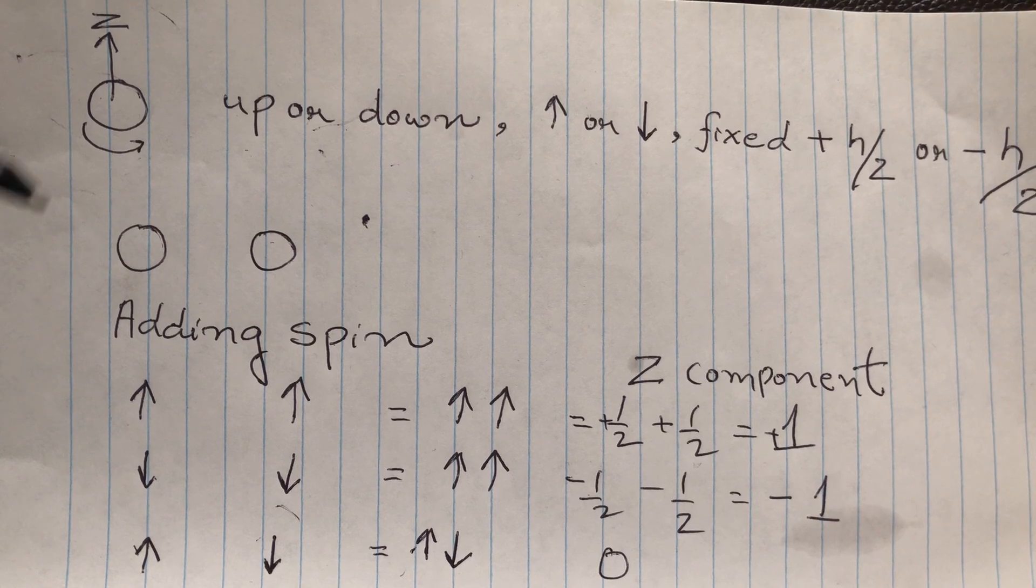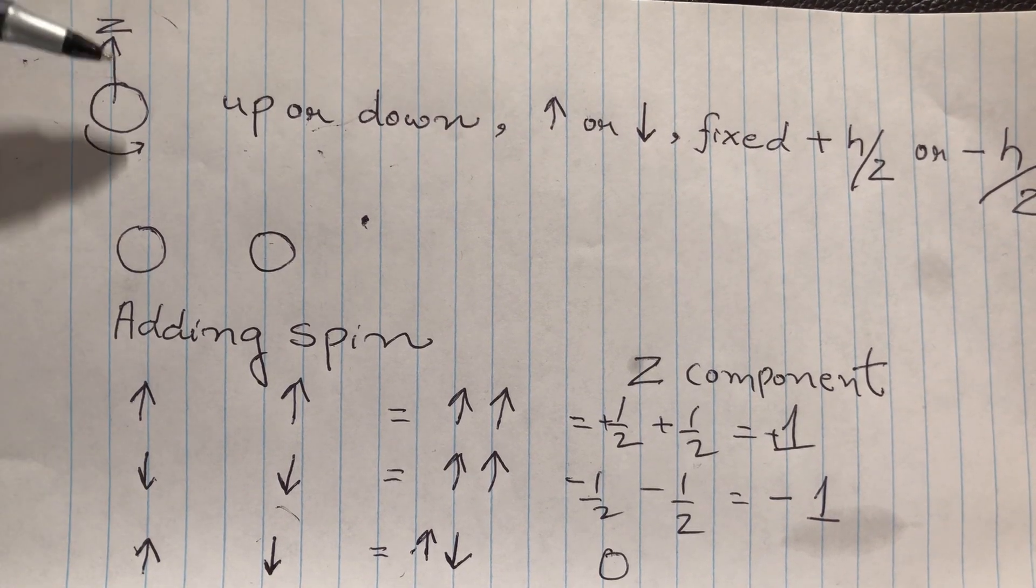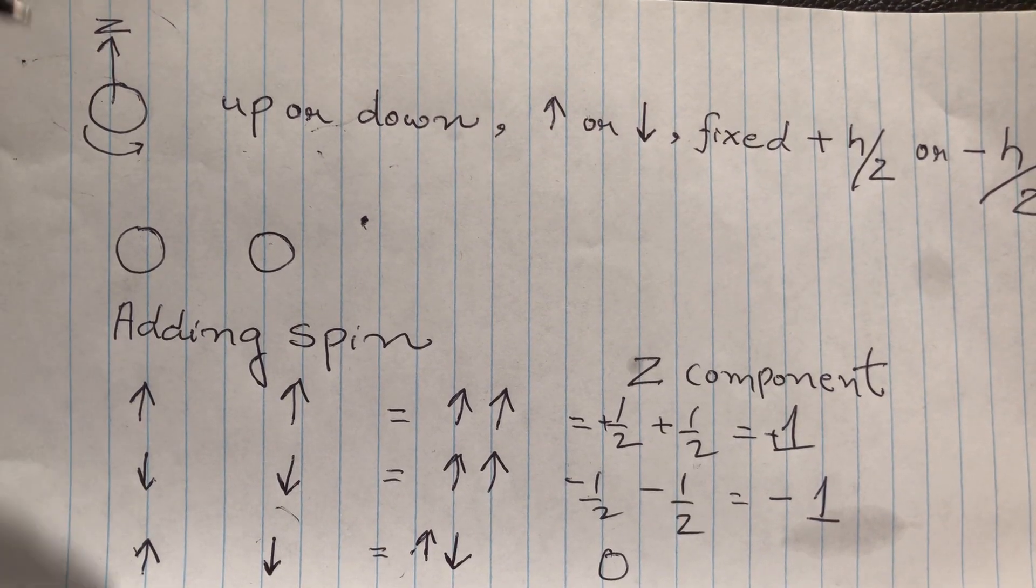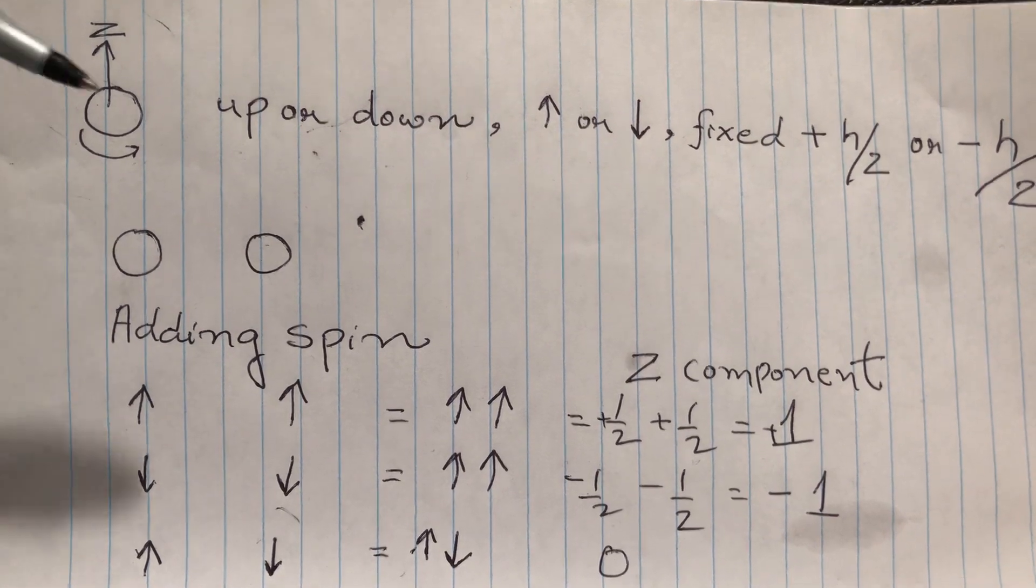The reason is that these spins, they are not numbers, they are vector components. So you have to add them similarly. Let's add them.